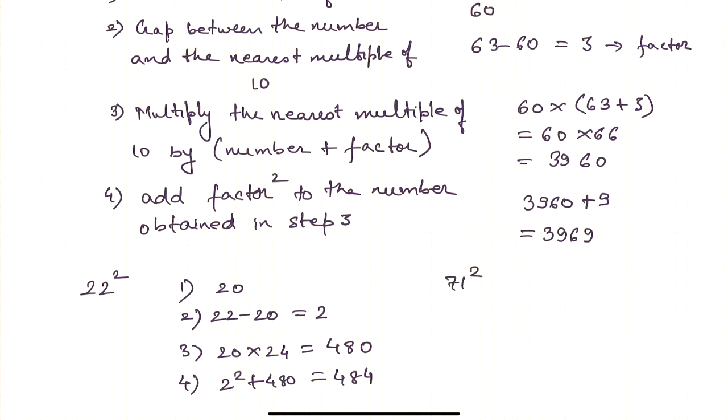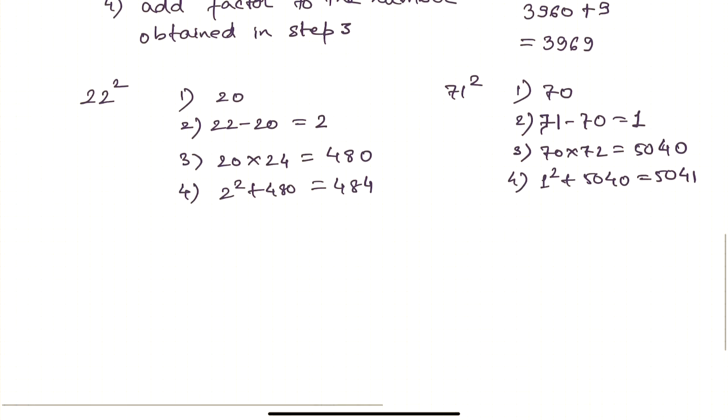Let's take another example, 71 square. First, the nearest multiple of 10 is 70. The gap is 71 minus 70 equals 1. Third, multiply 70 into 72, which is nothing but 5040. Then fourth, add 1 squared to 5040, which is 5041.